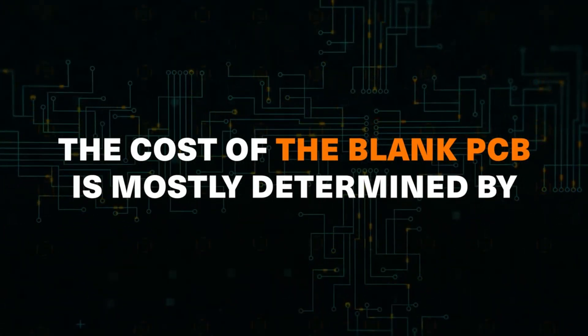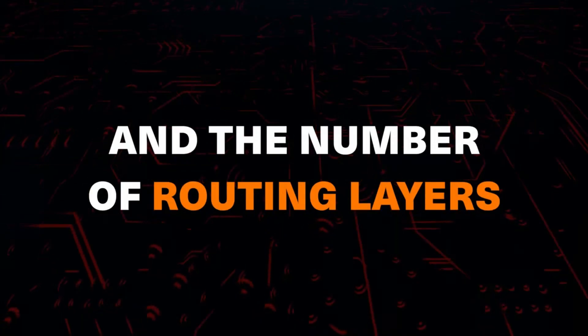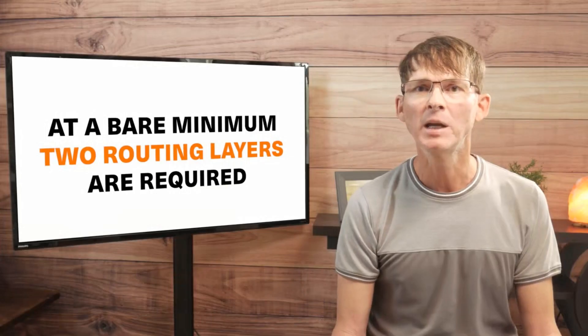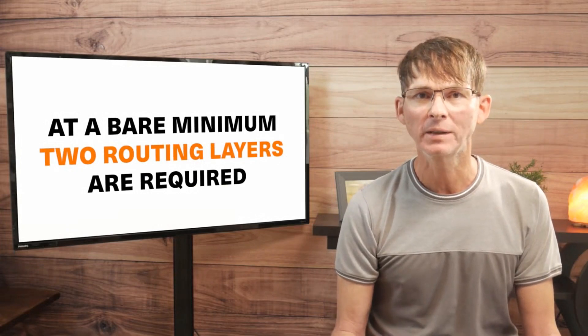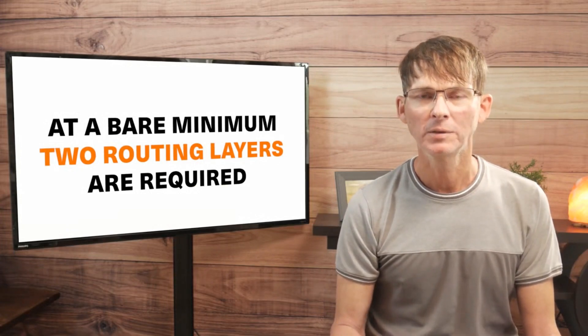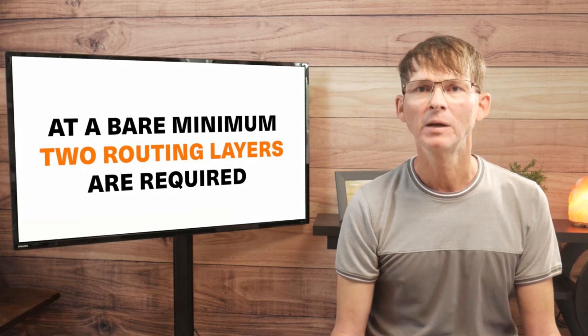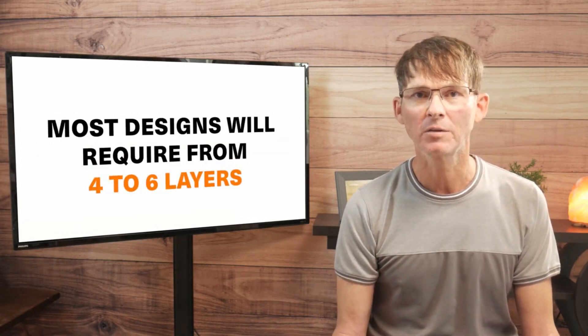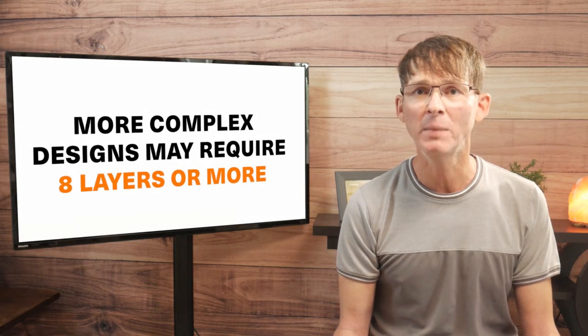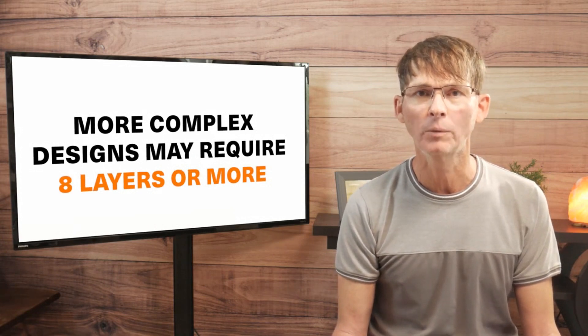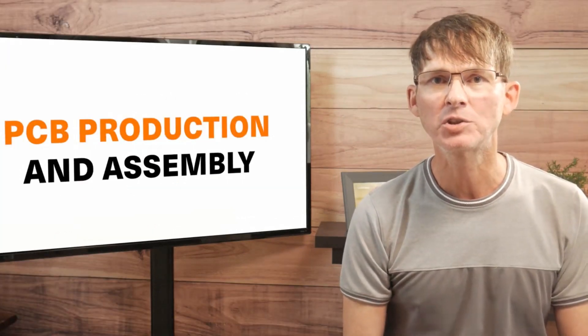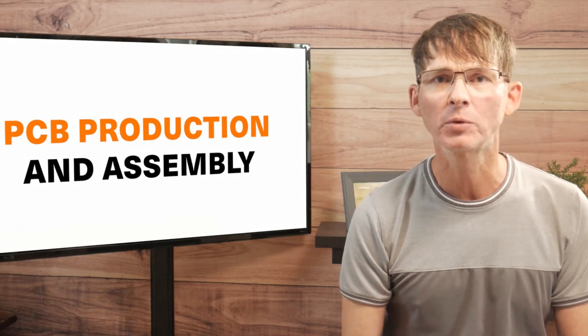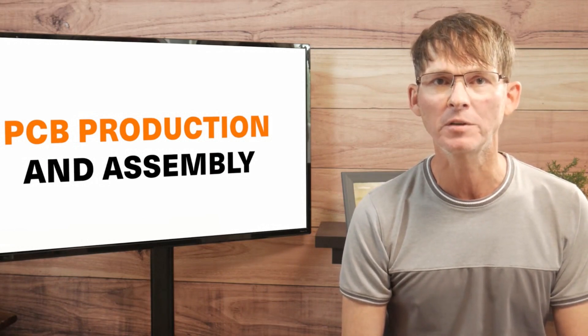The cost of the blank PCB is mostly determined by its size and the number of routing layers. At a minimum, you'll need two routing layers. You have a top and a bottom layer. However, most designs will require four to six layers. More complex designs may require eight layers or more. Increasing the number of layers generally allows you to also reduce the overall size of the printed circuit board.